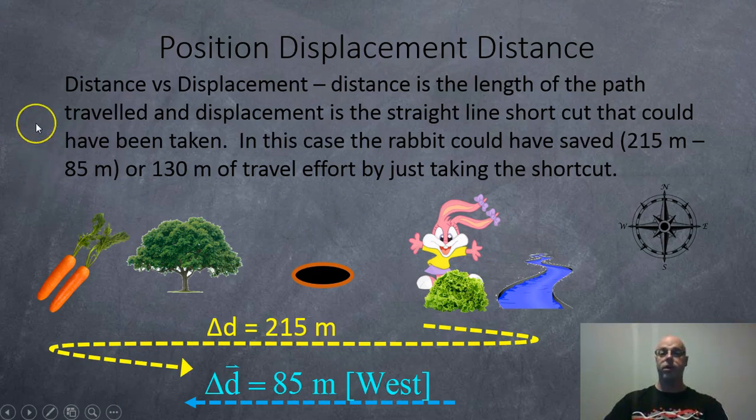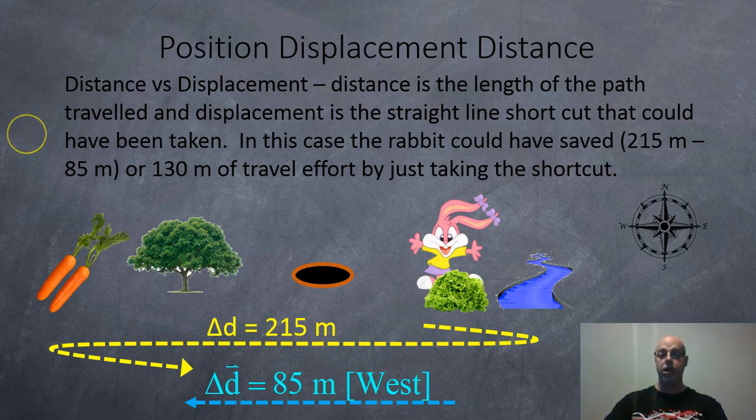Distance versus displacement. So distance is the length of the path traveled, and displacement is the straight line shortcut that could have been taken. So in this case, the rabbit could have saved 215 subtract 85 or 130 meters of travel effort just by taking the shortcut. Mind you, you would have missed out on the water and carrots.